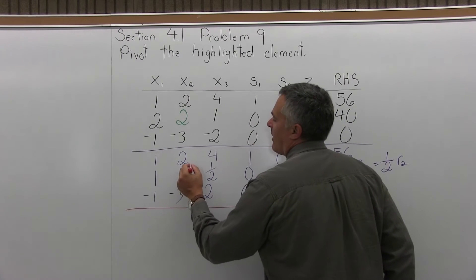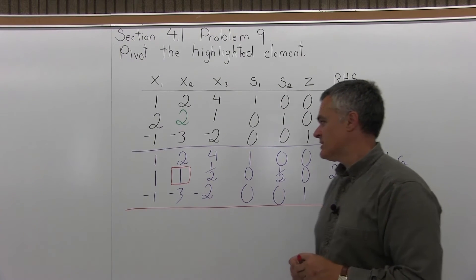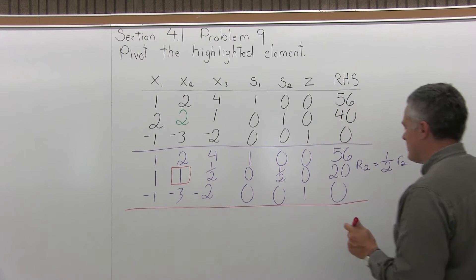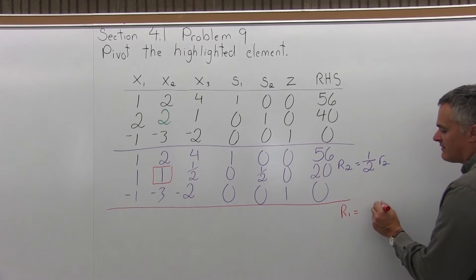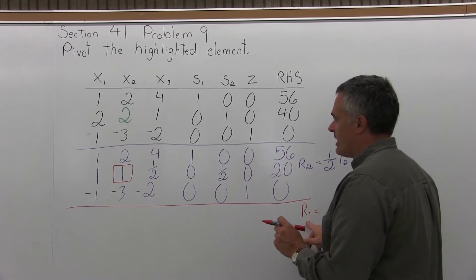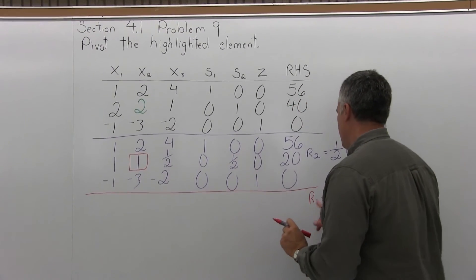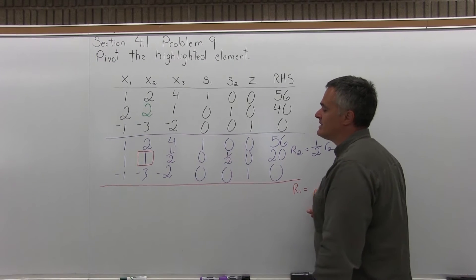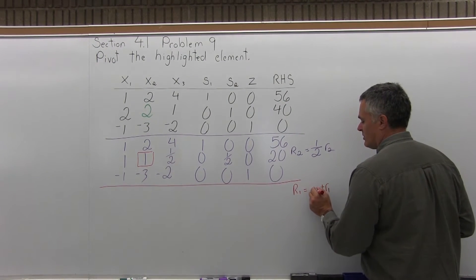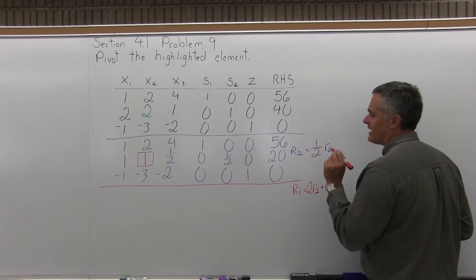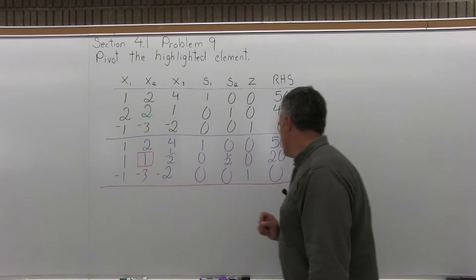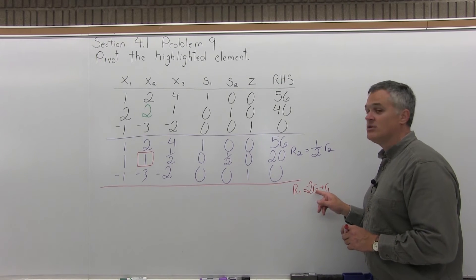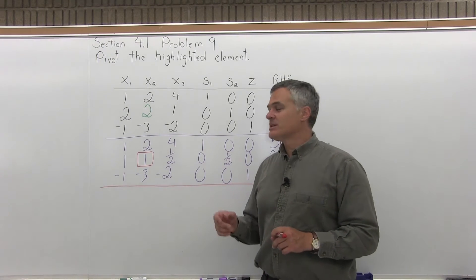Now I need to make the rest of that X2 column into 0s. There's a 2 in the top position of the X2 column that needs to become a 0 — it's a positive 2. So next to the top row, I'm going to write: row 1 equals negative 2 times row 2 plus the old row 1. That will make my 0 where it has to go, but it changes every value in the top row.